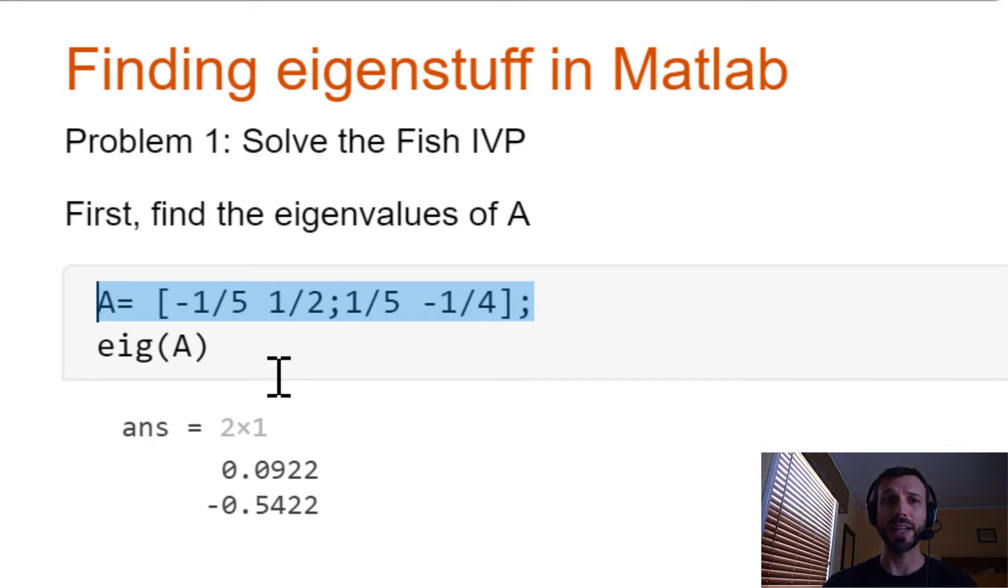As we mentioned in class, the eigenvalues give you a lot of information about asymptotic behavior for the system. This can be done in MATLAB with the eig command. So typing eig(A) and running will result in two eigenvalues: 0.0922 and negative 0.5422. You can already see something going on here in the sense that one of those two eigenvalues is positive.